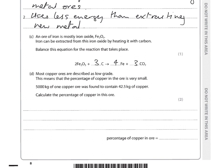Most copper ores are described as low grade — the percentage of copper in the ore is very small. 5,000 kg of one copper ore was found to contain 42.5 kg of copper. Calculate the percentage of copper in the ore: 42.5 divided by 5,000 times 100 equals 0.85%.